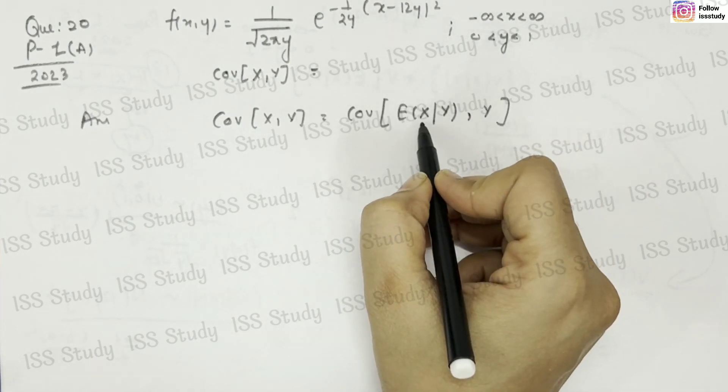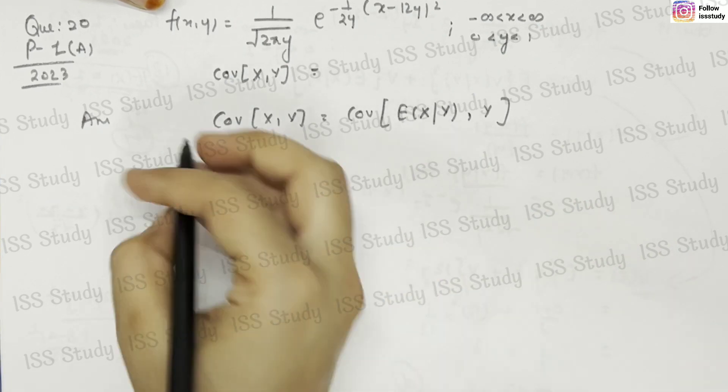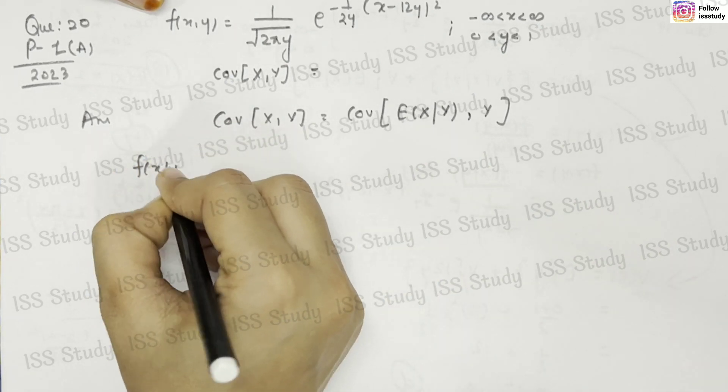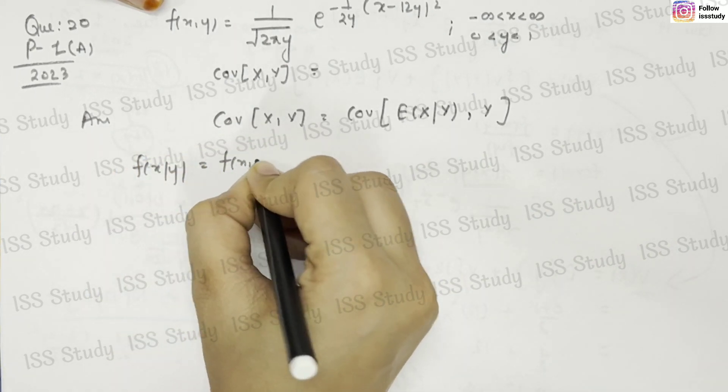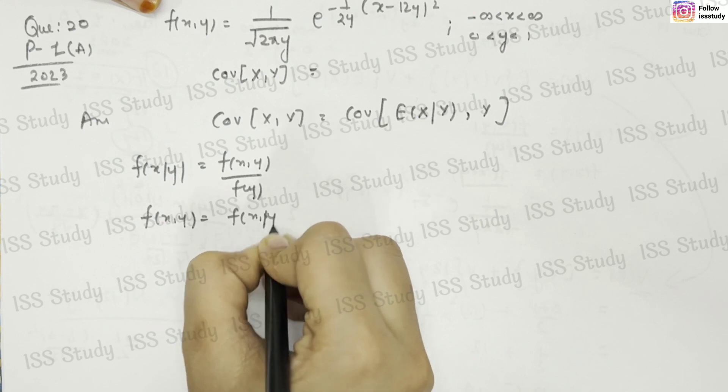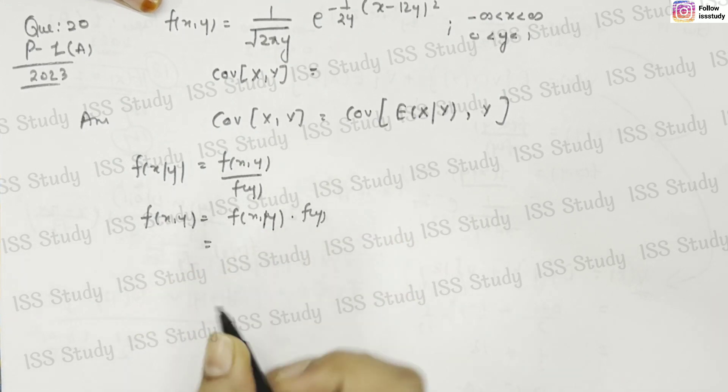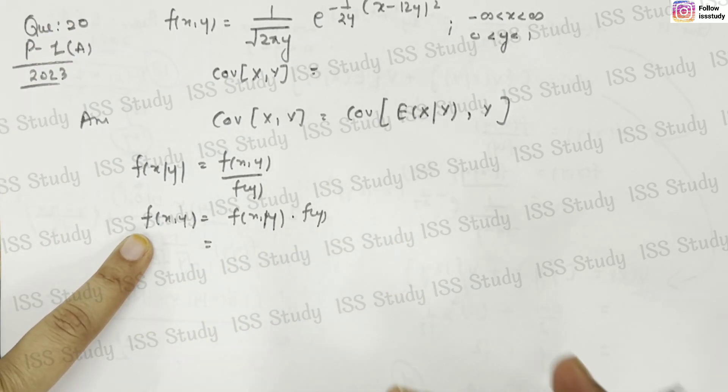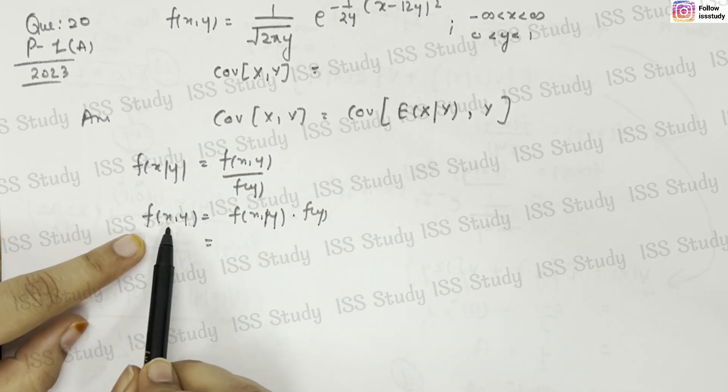For that, we want the conditional distribution of x given y. We know from our studies that f(x|y) can be written as f(x,y) divided by f(y). From here, f(x,y) equals f(x|y) times f(y). We need LHS to equal RHS, so we have the value of the joint PDF on the left-hand side.